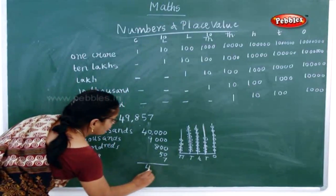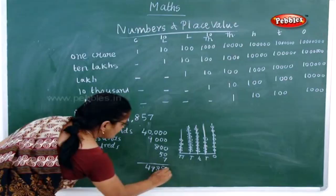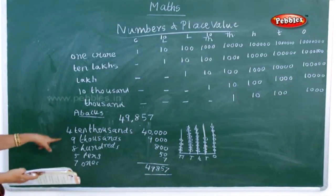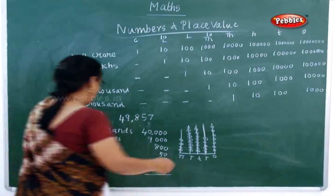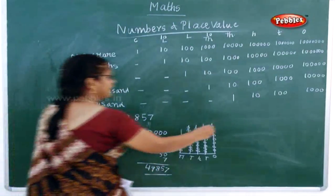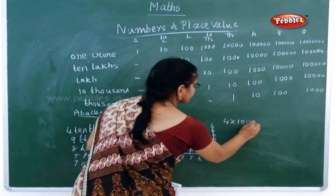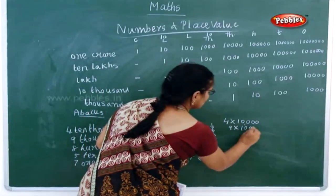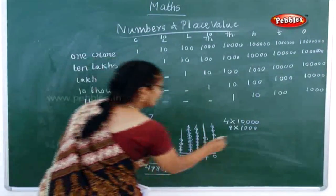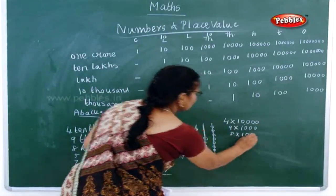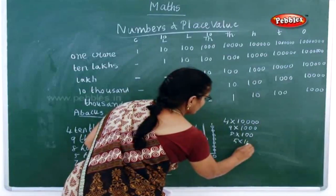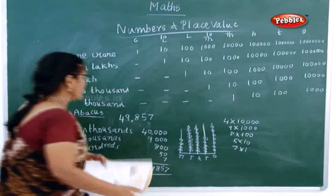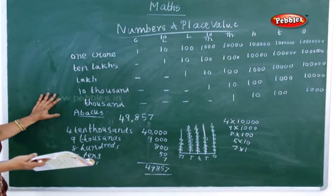Now how will you write? 49,857. So this is how you have to represent. And one more way you can write: four into ten thousand, plus nine into one thousand, plus eight into one hundred, plus five into ten, plus seven into one. So this is how you will write it in the abacus form. Is it clear?